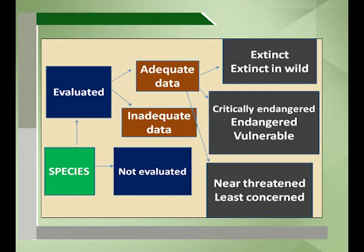Then there are species for which there is inadequate data — data is not sufficient to evaluate which category they fall into — and then species that have not been evaluated. Evaluated species with adequate data are divided into extinct, extinct in the wild, critically endangered, endangered, vulnerable, near threatened, and least concerned.